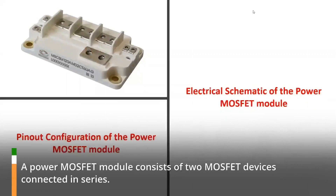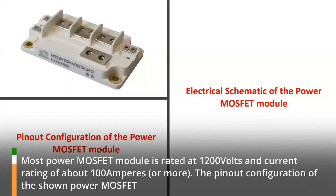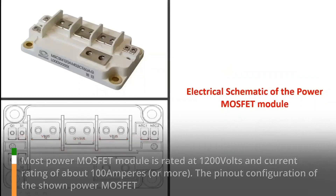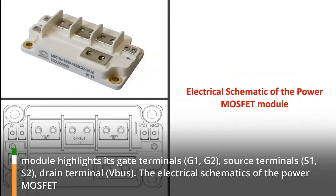A power MOSFET module consists of two MOSFET devices connected in series. Most power MOSFET modules are rated at 1200 volts and a current rating of about 100 amperes or more. The pinout configuration of the shown power MOSFET module highlights its gate terminals G1 and G2, source terminals S1 and S2, and drain terminal bus.